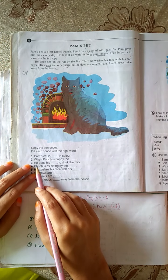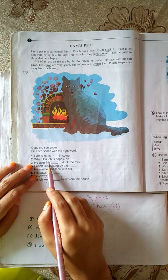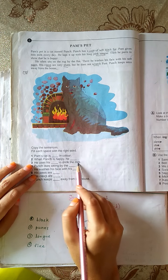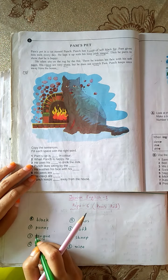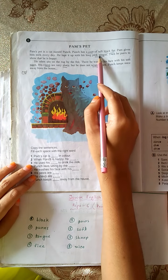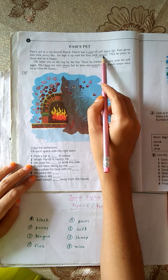3. He uses his dash to drink the milk. He uses his tongue. T-O-N-G-U-E, tongue.